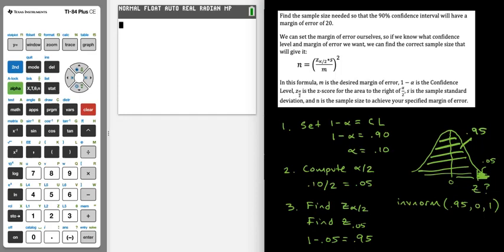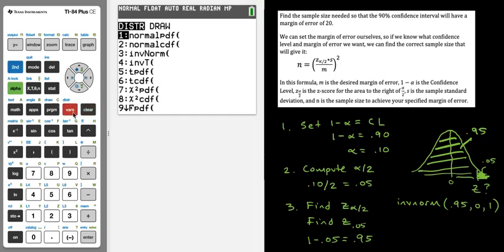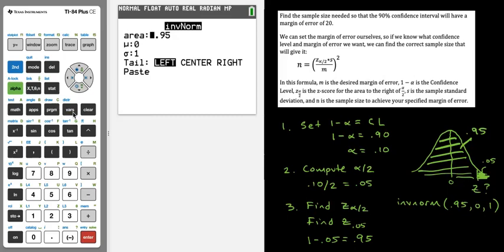And we are going to set this up in the calculator where we say inverse norm, our area to the left is 0.95. And then in the standard normal distribution, our mean is 0 and our standard deviation is 1. So let's do this. We're going to say second VARS. We go down to inverse norm. And next to area, we are going to enter the area to the left. And then you could see that the mean is 0, the standard deviation is 1.